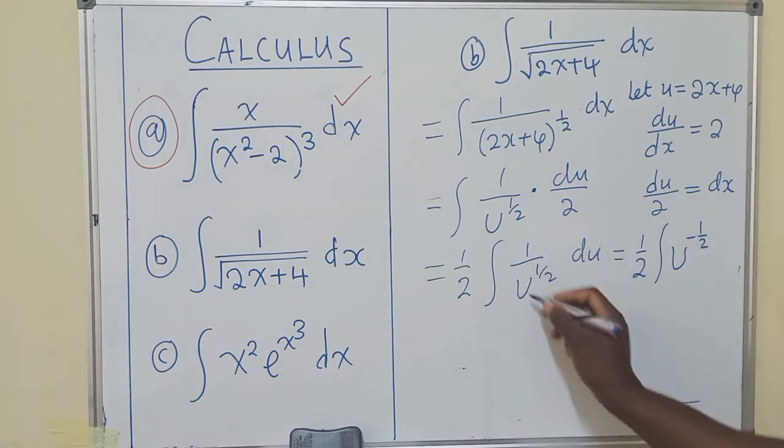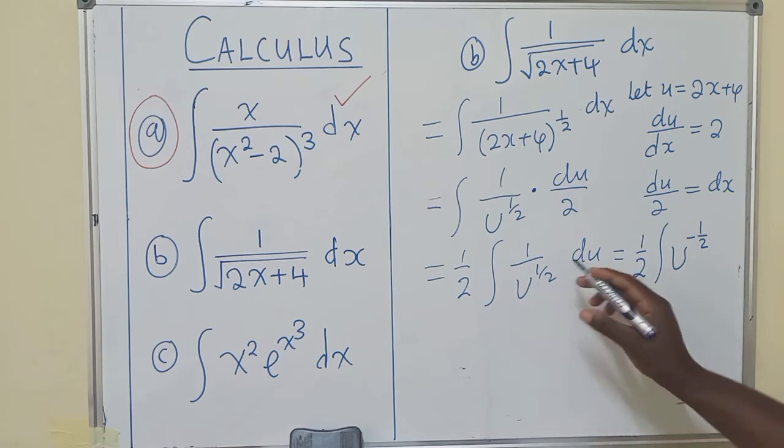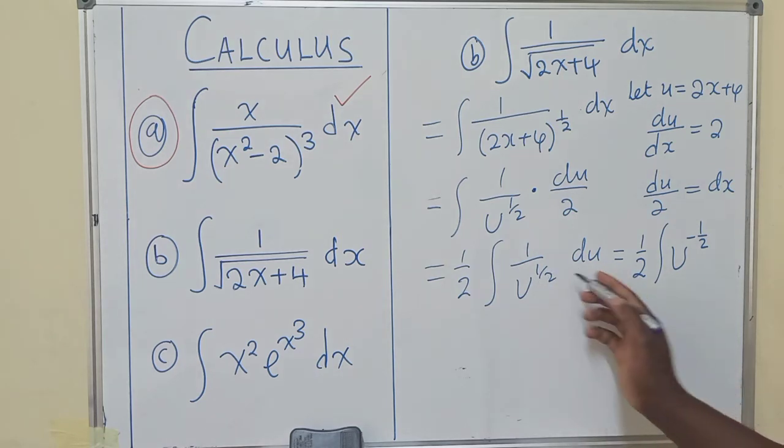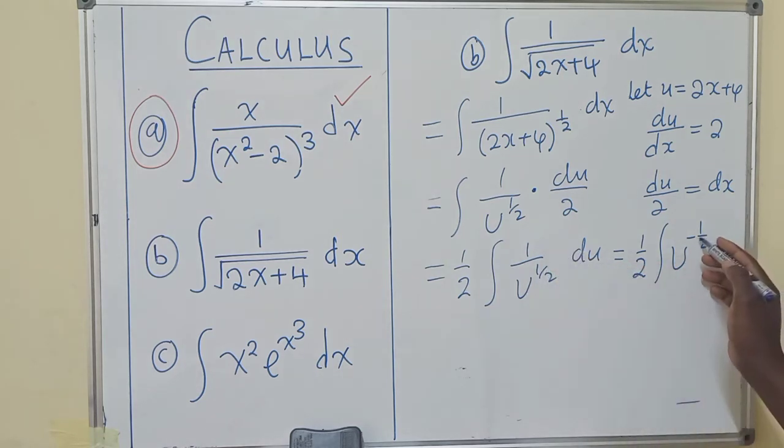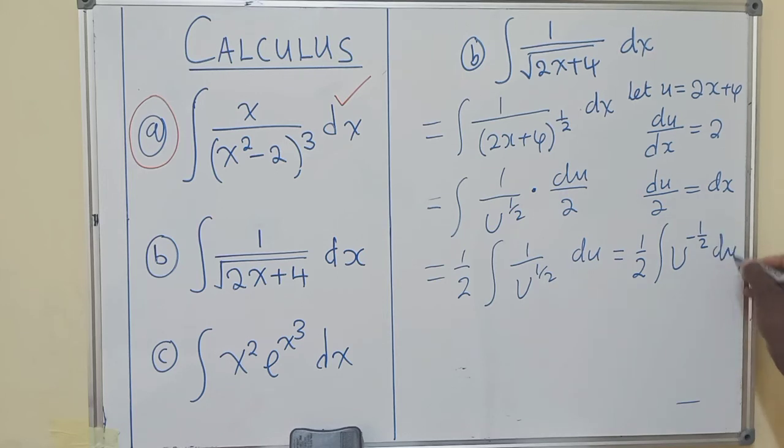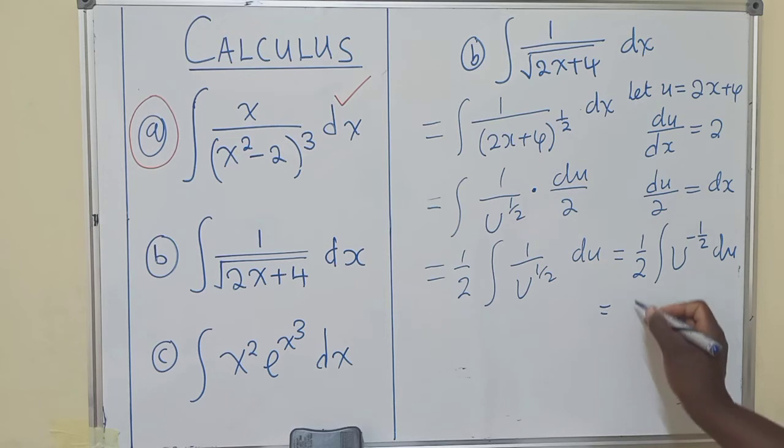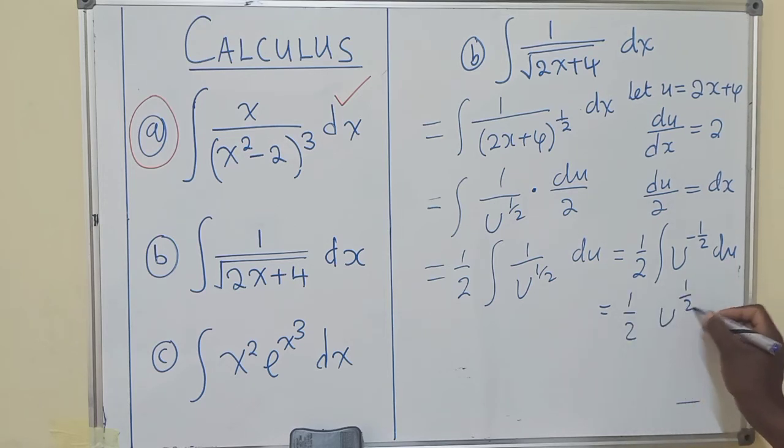In a fraction form, it's very difficult to integrate, so we use the laws of indices. This goes on top, so it will have a negative power, du right here. So now here we can integrate. We shall have 1/2, u to the 1/2 over 1/2.